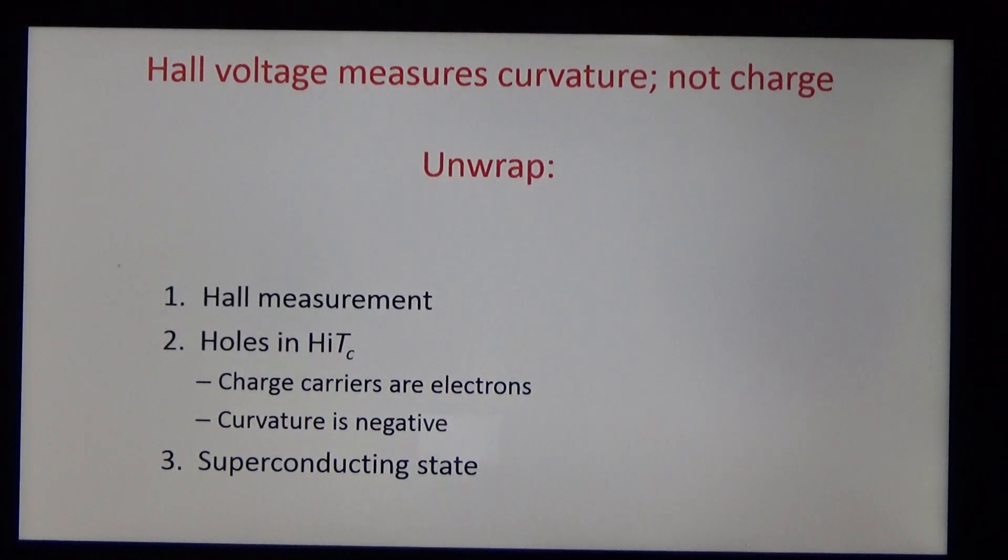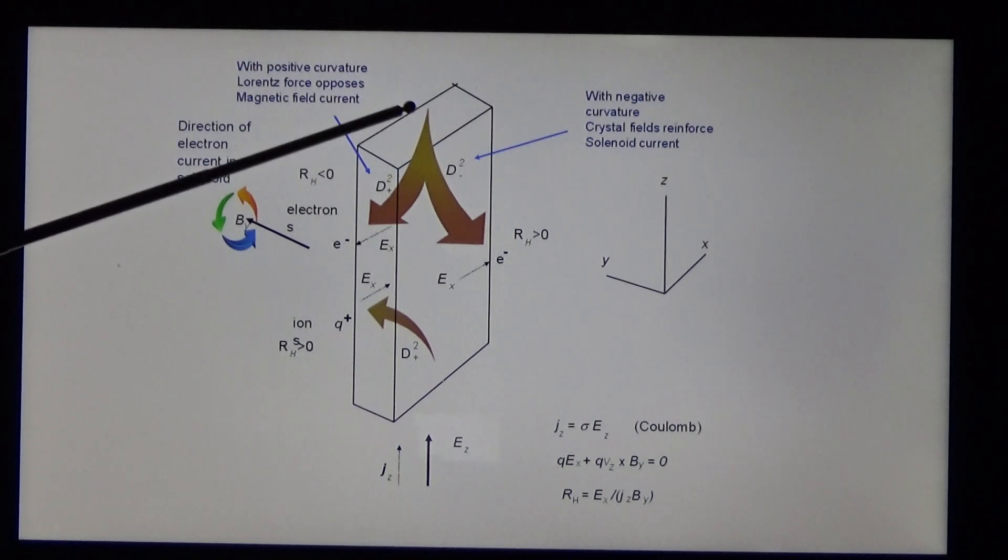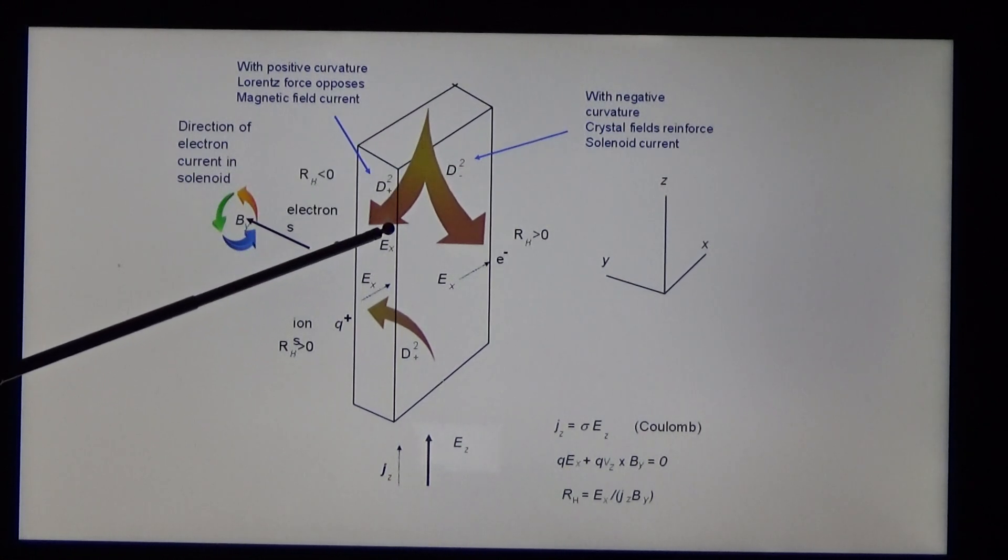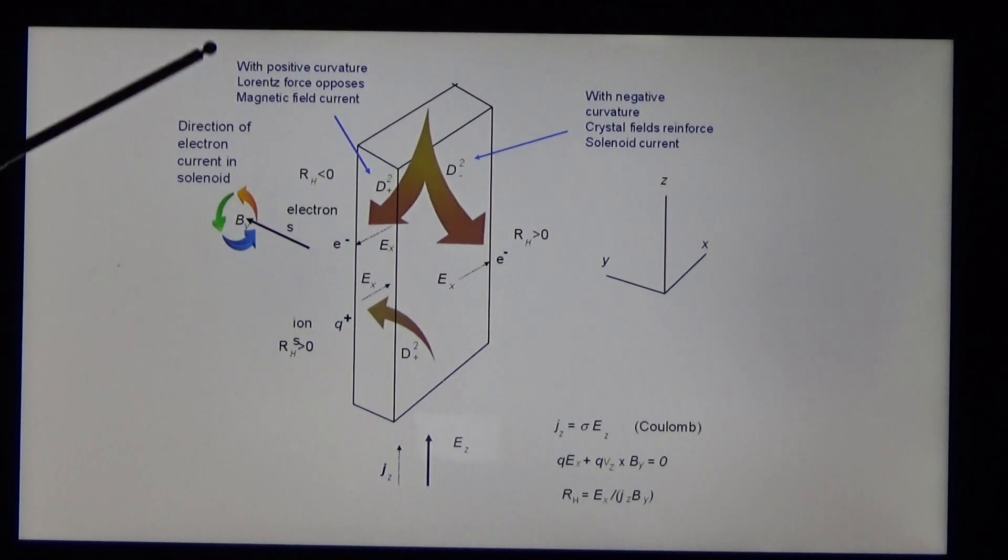We need to unwrap the Hall measurement, holes in high TC and superconducting state. The Hall measurement occurs in two moments, a transient current and a steady-state Hall voltage. What happens if a charged particle enters a magnetic field? Does it reinforce the field or oppose the field? The Lorentz law shows that it opposes the field. The curvature is opposite to the curvature of the electrons in the solenoid coil. But if this electron is moving in a crystal field with negative curvature, it reinforces the field. And the Hall coefficient is positive, the same sign as ionic conductivity. So we understand now why high TC has a positive Hall coefficient.